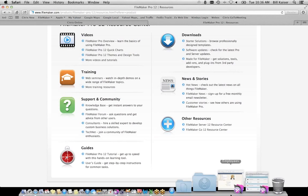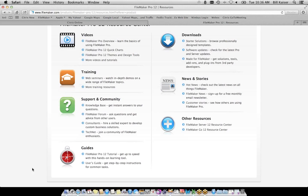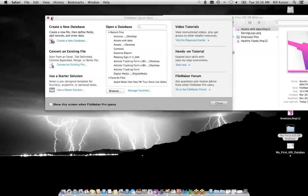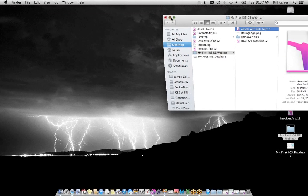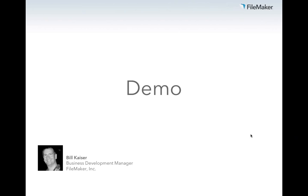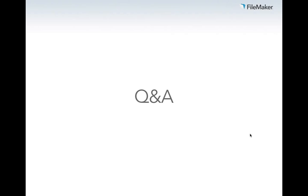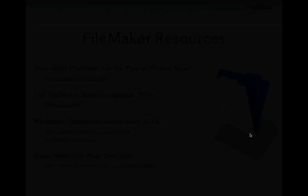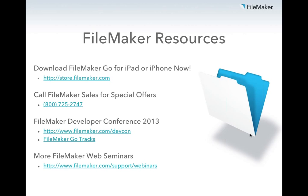It shows starter solutions with iOS-optimized layouts available to get you started. What do you do next? My recommendation is if you haven't already, build something. Download FileMaker, download FileMaker Go from the App Store, build something in FileMaker Pro, and customize it. With FileMaker you don't have to have all your business rules predefined — you can start easy and modify as time goes on.